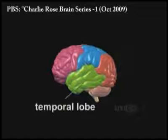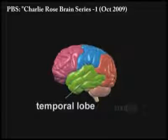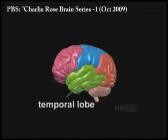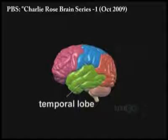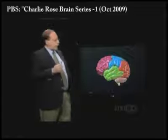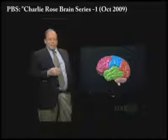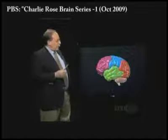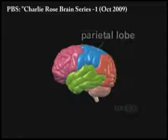The temporal lobe, here shown in green, is involved in a number of complex functions. It's involved in higher processing of visual information, in the laying down of memories, and in the processing of information about sounds and in the conversion of information about sounds into linguistic representations and into the programs that allow us to speak and understand language.